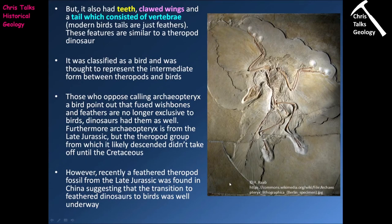There were also leg feathers present in the fossil, but they were destroyed during the process of trying to uncover the tail bones. It does have these bird-like features; however, it also has teeth, claws on its wings, and a tail that consists of vertebrae — features which are related to the theropod dinosaurs. So it looks like what you have here is an intermediate species between theropod dinosaurs and birds.